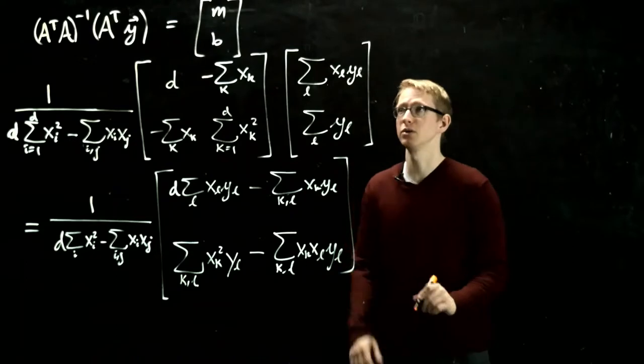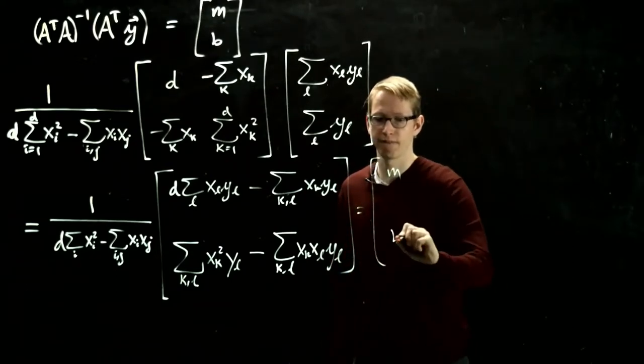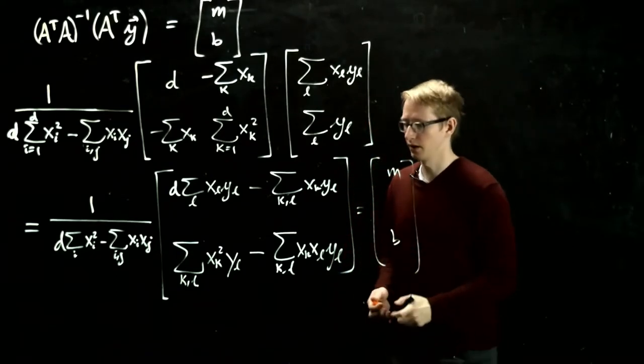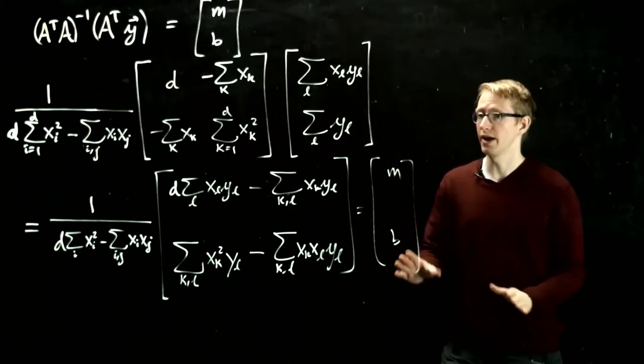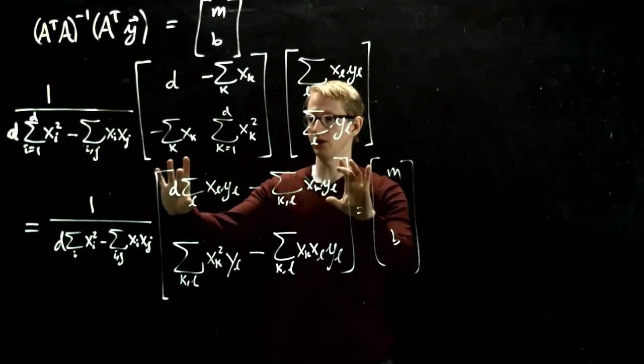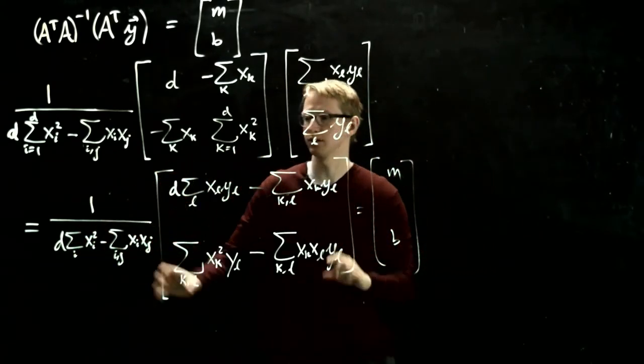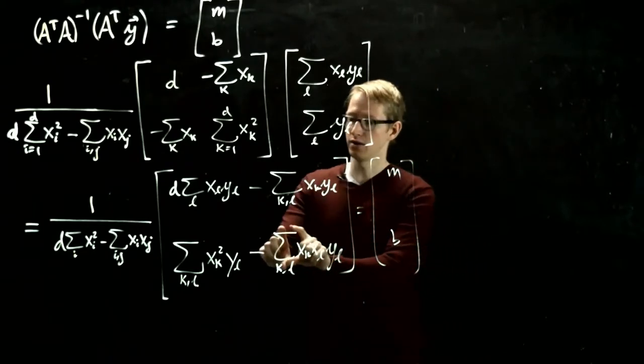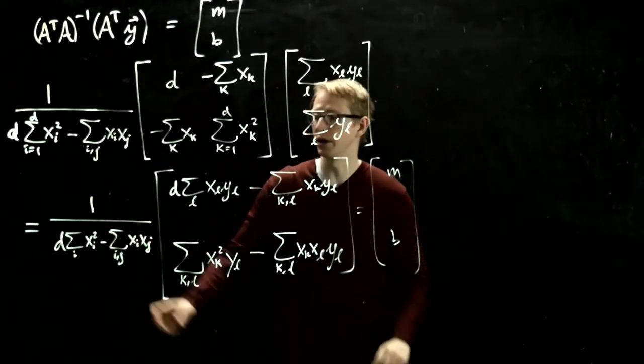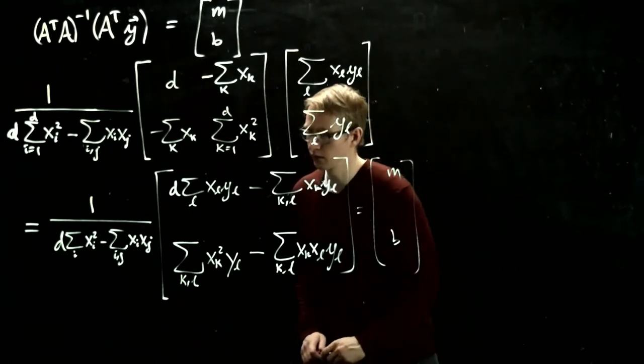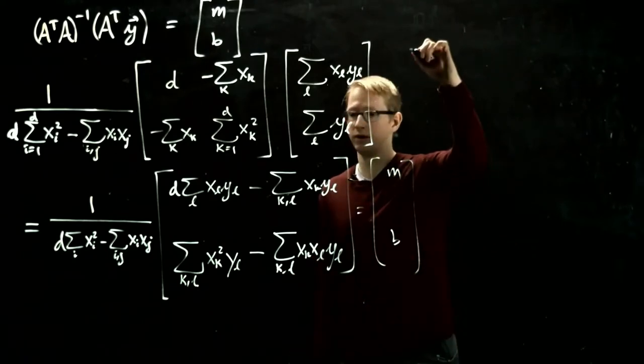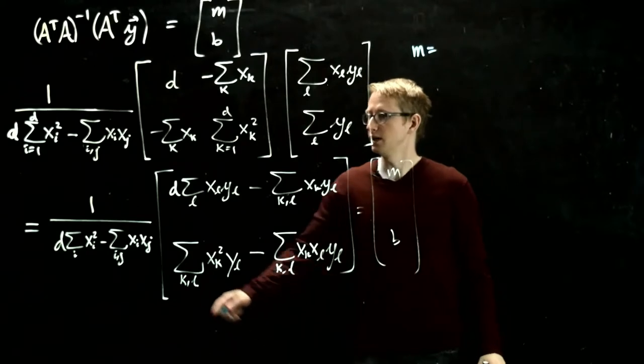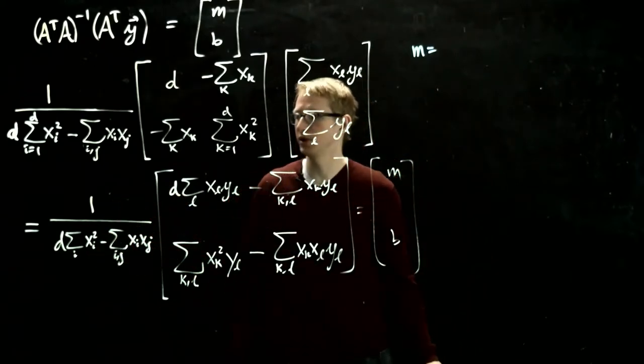And this is what equals mb. Now, so this actually solves the whole problem. So we know that m equals this first expression here divided by this determinant, and the y intercept equals this expression here divided by that determinant.